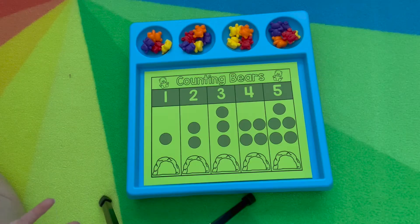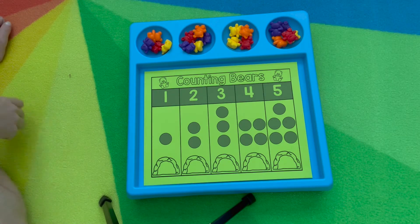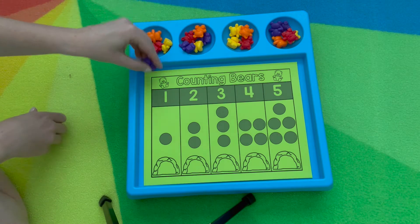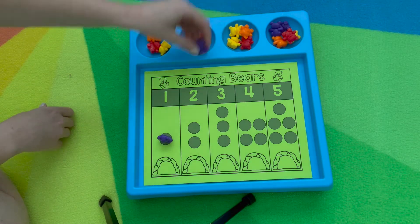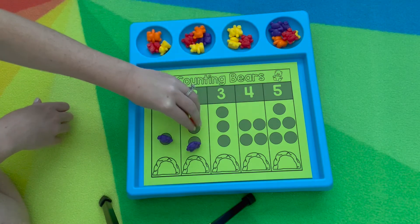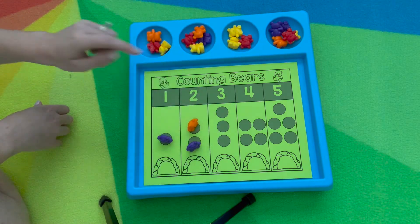These you can use different counters for these countermats. The first one is counting bears. So they will just count one to one. One matches one. They can use any of them. One, two matches two. They just count how many.